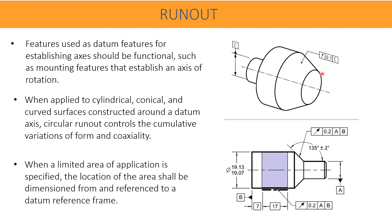When applied to cylindrical, conical, and curved surfaces, we can indirectly ask which are the features where we can apply runout. The features are cylindrical, conical, and curved surfaces constructed around a datum axis. Circular runout controls cumulative variations of form and coaxiality. So the runout tolerance is the combination of cumulative value of form and coaxiality.